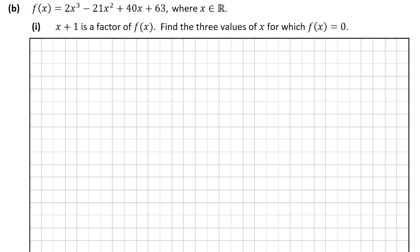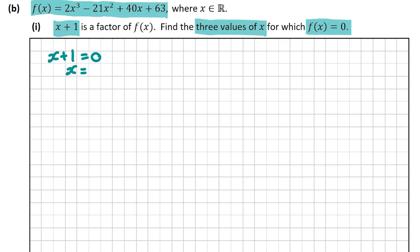We're told that f of x is equal to 2x to the power of 3 minus 21x squared plus 40x plus 63. Part i tells us that x plus 1 is a factor of f of x, and we're asked to find three values of x for which f of x equals 0. They've already given us one: if x plus 1 is a factor, then x plus 1 equals 0, so x equals minus 1 is a value. We're going to divide f of x by x plus 1 to get a quadratic.